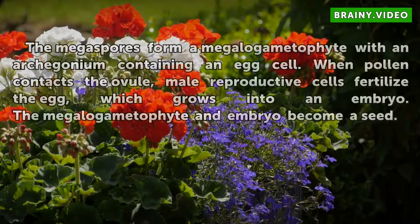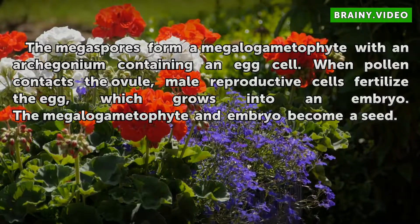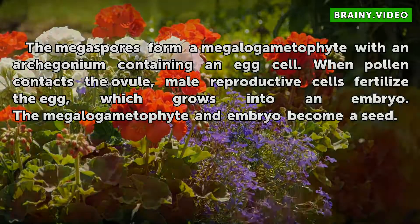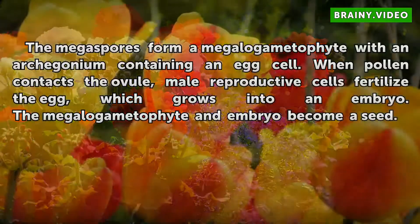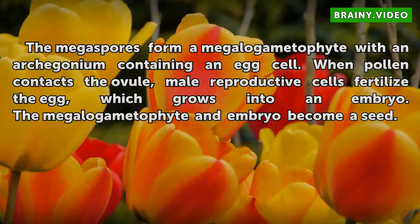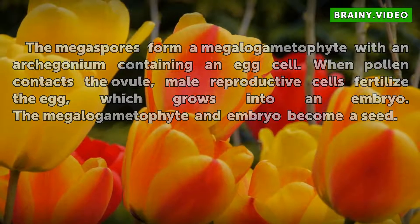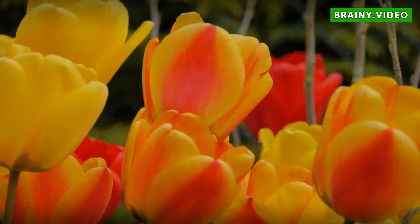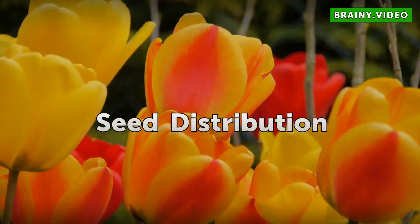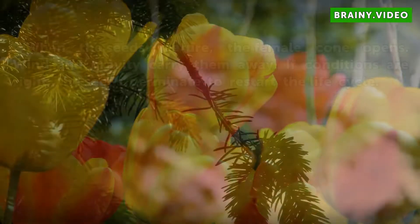Fertilization: the megaspores form a megagametophyte with an archegonium containing an egg cell. When pollen contacts the ovule, male reproductive cells fertilize the egg, which grows into an embryo. The megagametophyte and embryo become a seed.